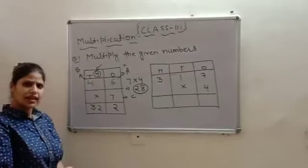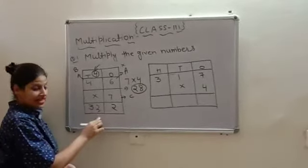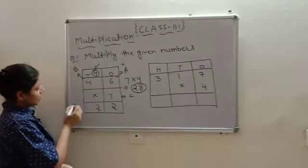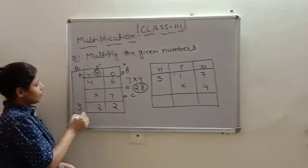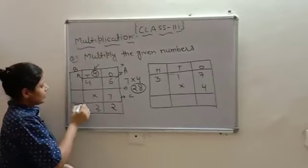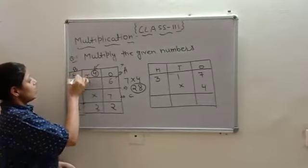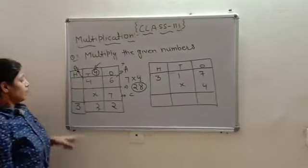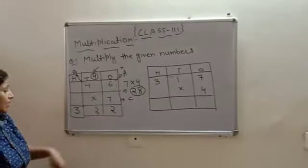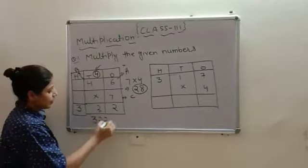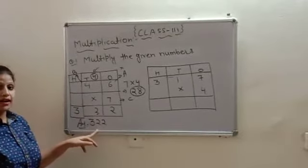So, 32. But, we cannot do like this. As I have told, one member can live at one's place. So, 3 has to be out. But, for 3 also, we will make a place. And, it will be 100's place. This is your 100's place. So, 3 will sit at 100's place. Together, it will be 322. Alright. Your product is 322.